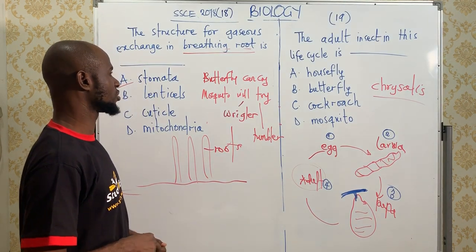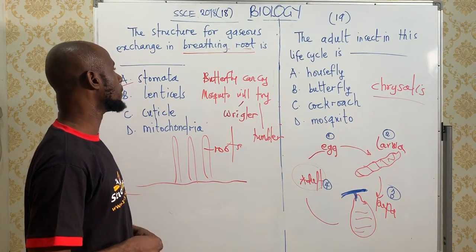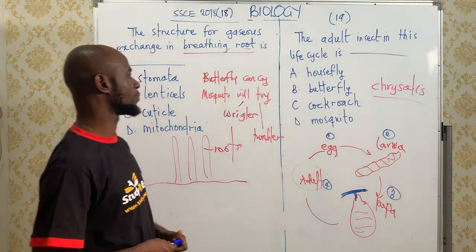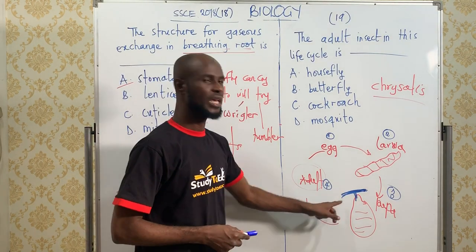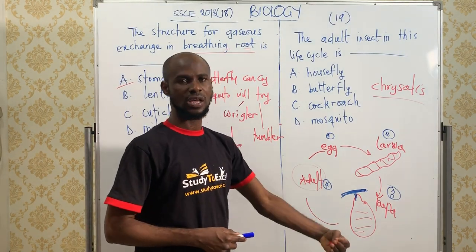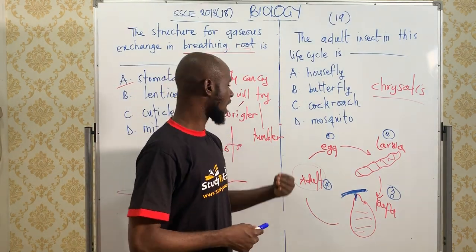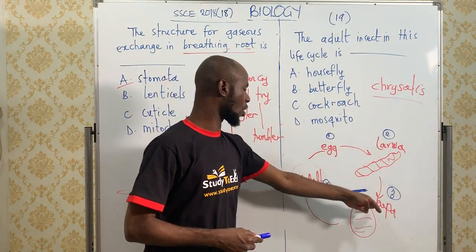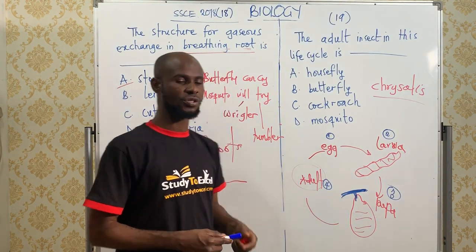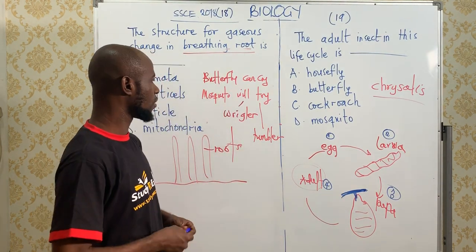So let's answer the question. The answer is going to be butterfly, because the butterfly is always outside the house and it has its pupa at the branch of a tree.